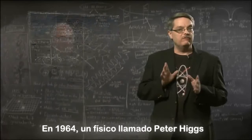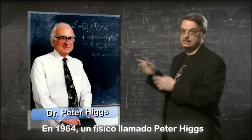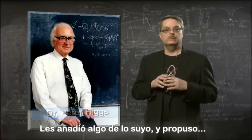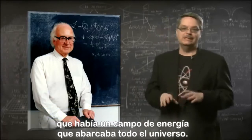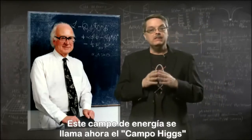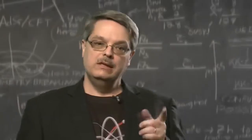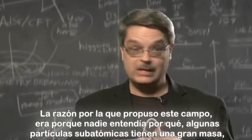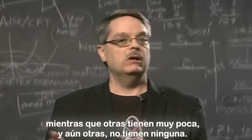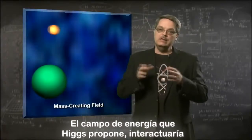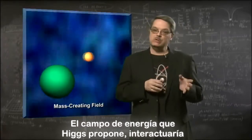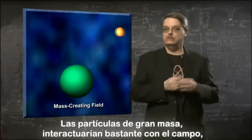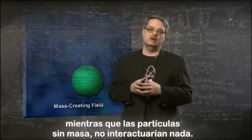In 1964, a physicist by the name of Peter Higgs took some ideas that were floating around at the time, added an insight or two of his own, and proposed that there was an energy field that permeated the entire universe. This energy field is now called the Higgs field. The reason he proposed this field was that nobody understood why some subatomic particles had a great deal of mass, while others had little and some had none at all. The energy field that Higgs proposed would interact with the subatomic particles and give them their mass.